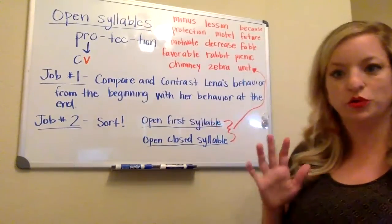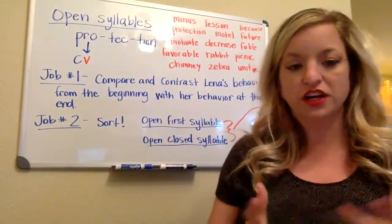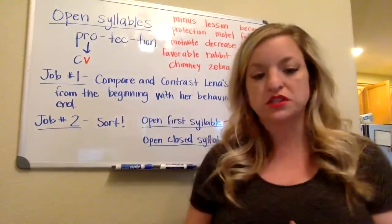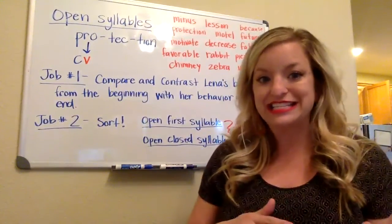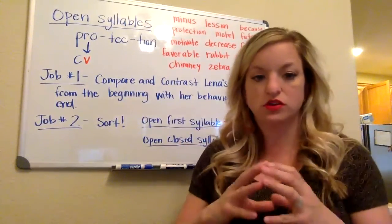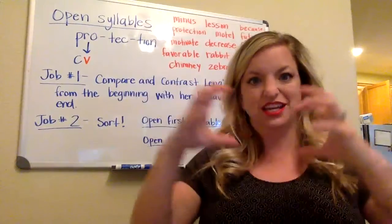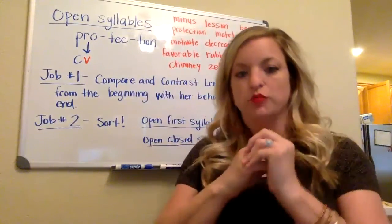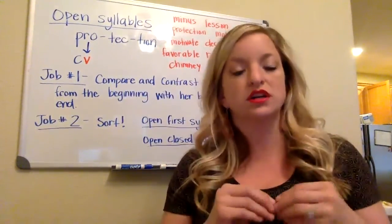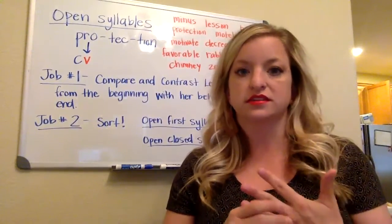Hi everybody, I'm here with your phonics. Last week I taught you about open syllables — they end in a vowel. A closed syllable is a consonant, a vowel, and a consonant; it closes in that vowel. With a closed syllable, the vowel normally makes a short sound: short a, short i, short u, things like that.